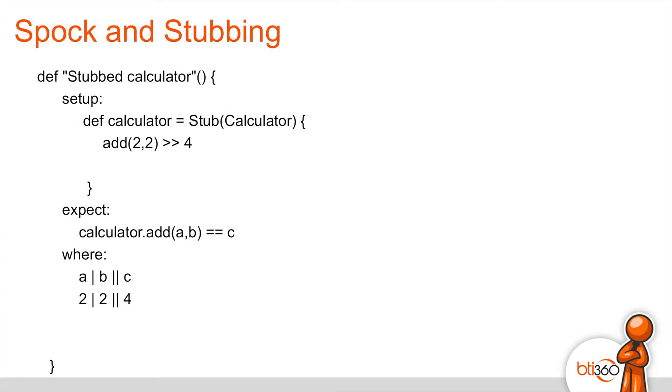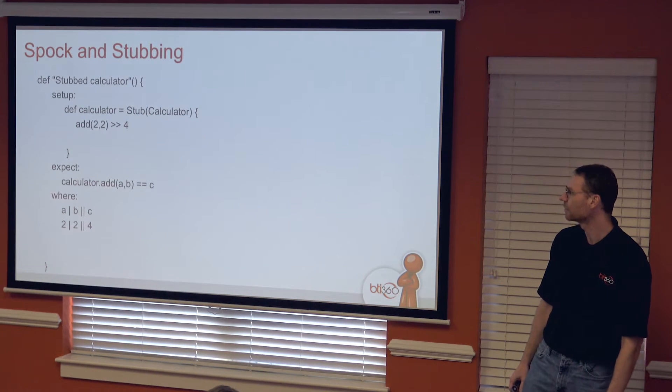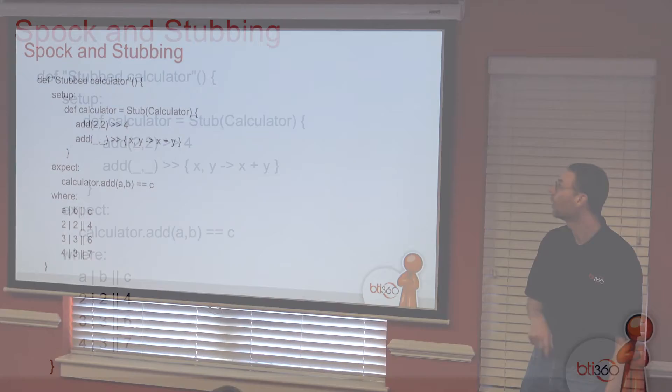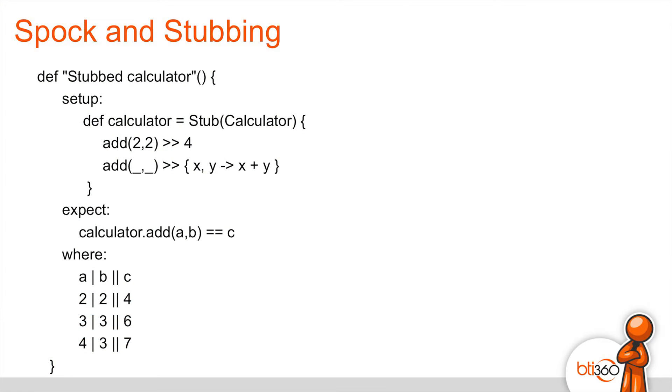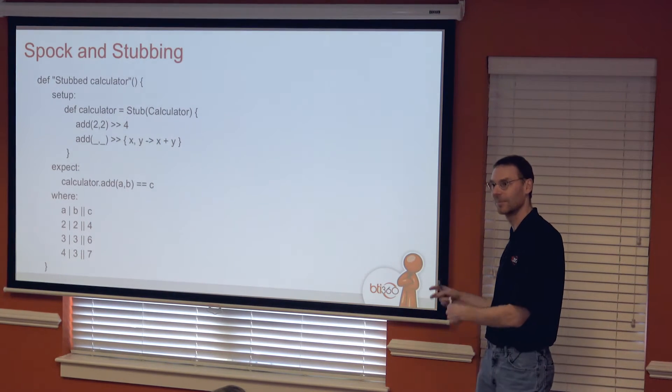All right, on to stubbing. So, I've got a stub calculator. This says when I do the add operation on my calculator, return the result for at least 2 and 2 as inputs. So, we've got 2 and 2 down our little table down below. You can see there's some missing things. This is a little bit of Groovy stuff going on here. Well, if you hand me anything else, meaning the little underscores are basically placeholders for I don't care what you're giving me, bind the first one to x and the second one to y, just because this is actually what's called a closure in Groovy.